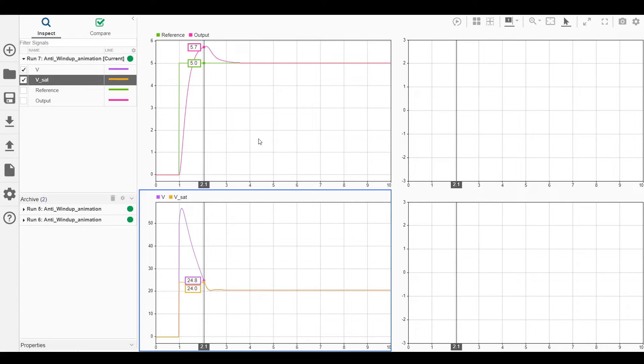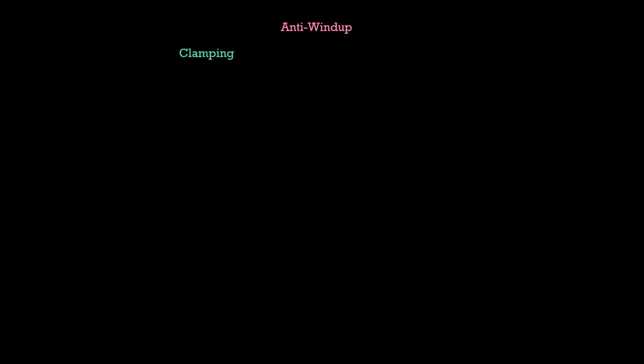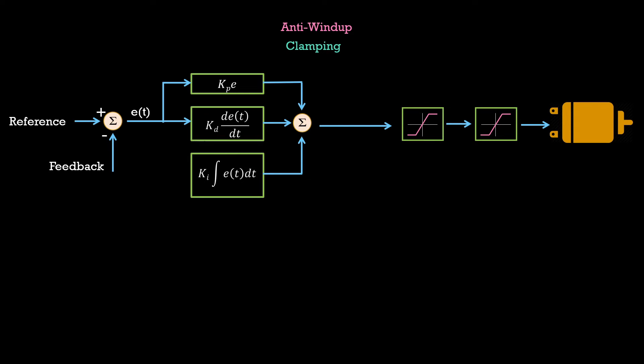But how do we avoid this overshoot? There are different anti-windup schemes to avoid this issue. All of them more or less do the same thing but in different ways. We will look at the clamping method. The idea is simple.